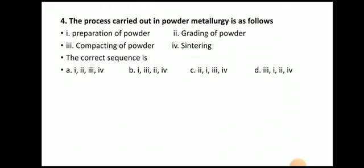Next question: The process carried out in powder metallurgy is as follows. The sequence is: first, preparation of powder; then grading of powder; then compacting of powder; then sintering. The answer is A. So first we prepare the powder, then grading is done, after that compacting, then sintering. That is the process carried out in powder metallurgy.